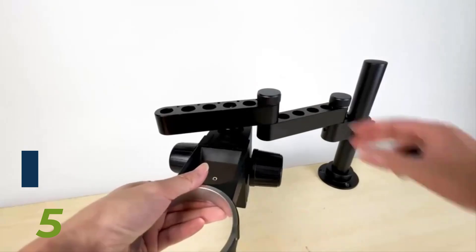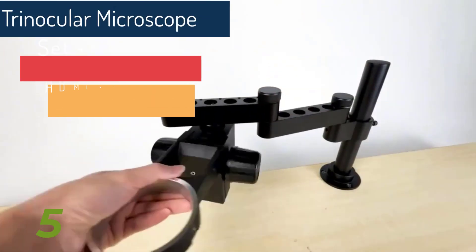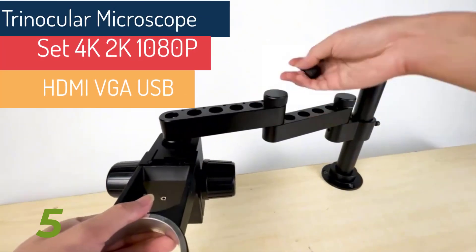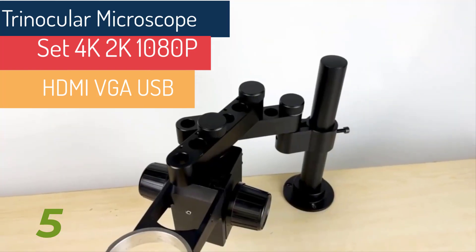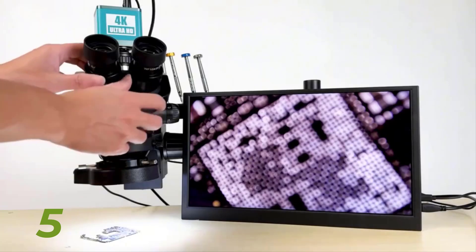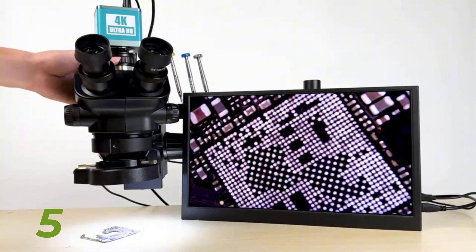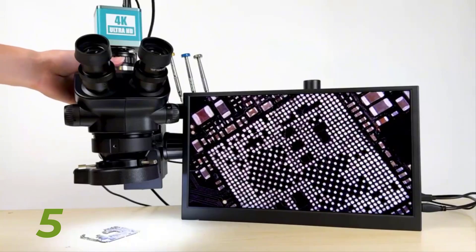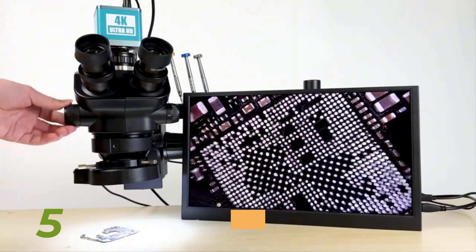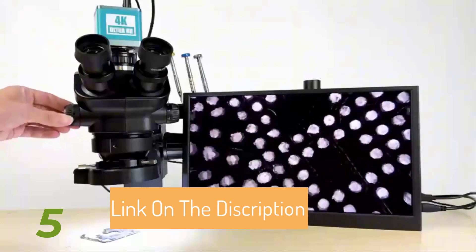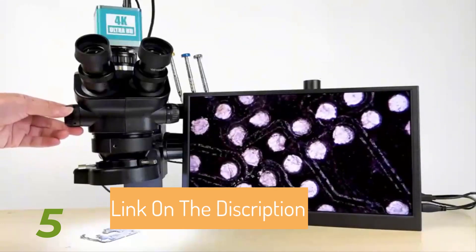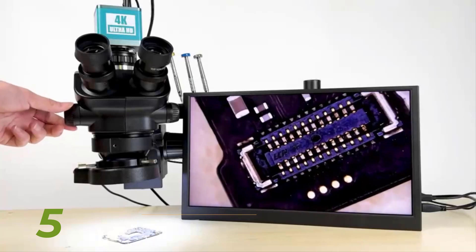The stereo microscope head provides a sharp three-dimensional erect image over a wide field of view, making it suitable for various applications from biological research to electronics repair. The ergonomic design includes a 45-degree inclined and 360-degree rotatable binocular head, adjustable interpupillary distance, and diopter adjustment in both tubes, ensuring comfort during prolonged use.